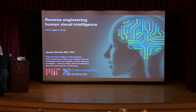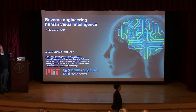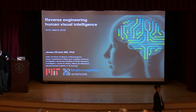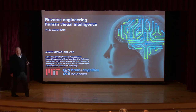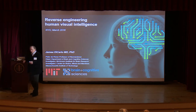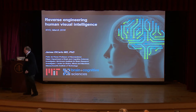The next speaker is Jim DiCarlo, who has given you all of his titles on his title slide. Jim is chair of the Department of Brain and Cognitive Science at MIT, and is well known for work that bridges the physiology and biology of object recognition and the use of deep neural networks to understand that biology. Without further ado, Jim.